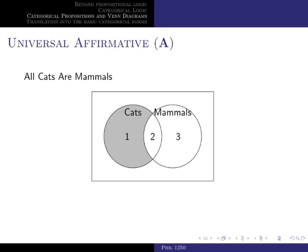In general, this is how we represent all propositions of form A — by shading area one. By doing that, we are saying that all S are P; that is, there isn't an S that isn't P, so the set of S's that are not P is empty.